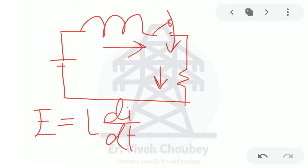Focusing on di/dt: the EMF generated is directly proportional to the rate of change of current — higher the rate of change of current, higher the EMF generated. Now, let's say this battery was providing 10 amps of current initially, and the switch is closed for 5 seconds.